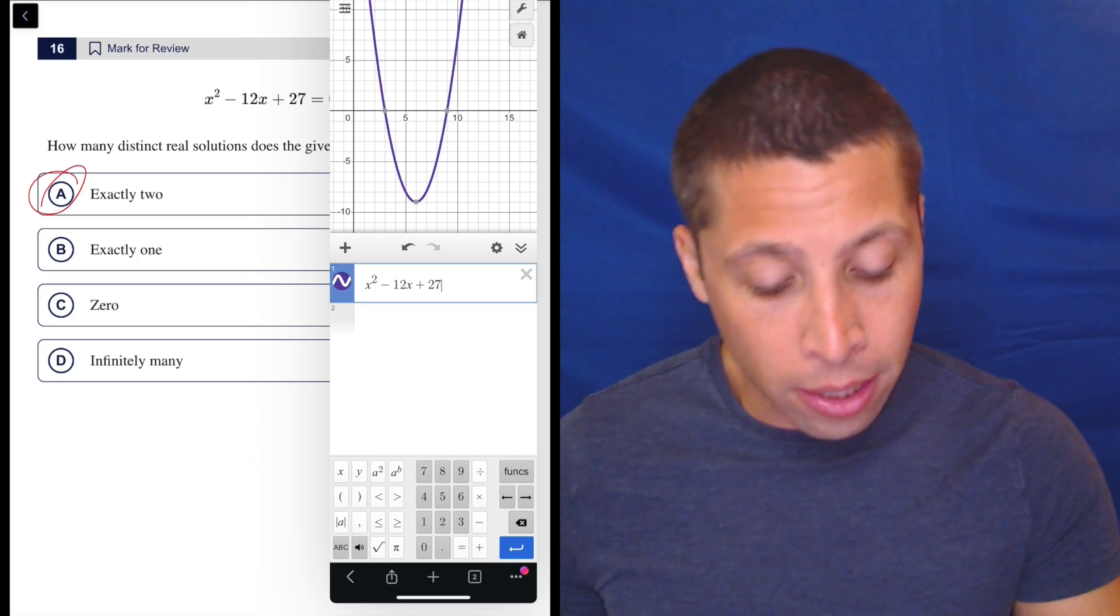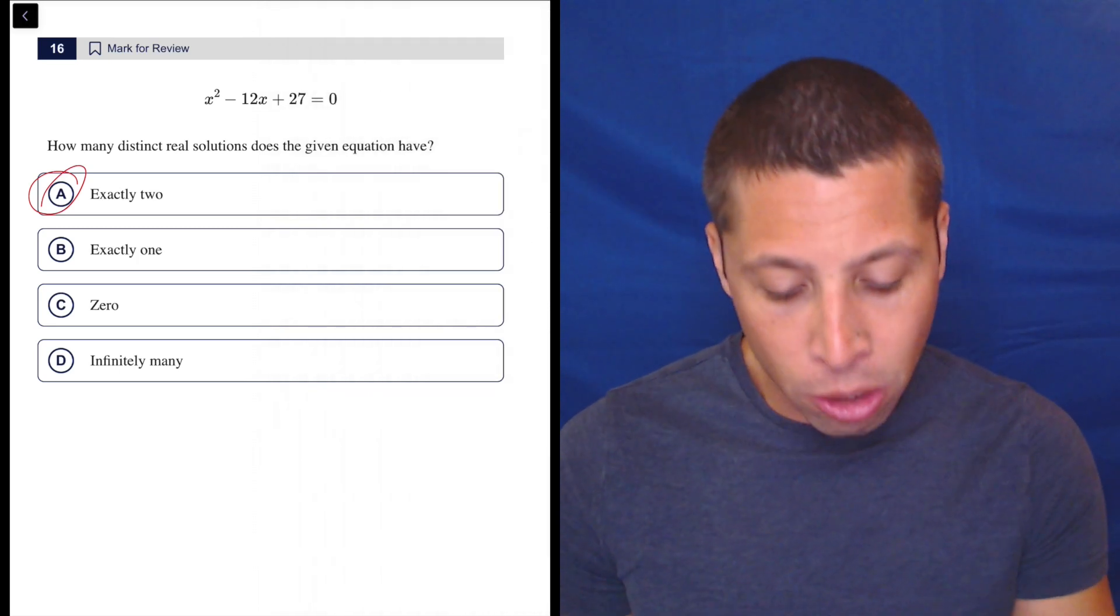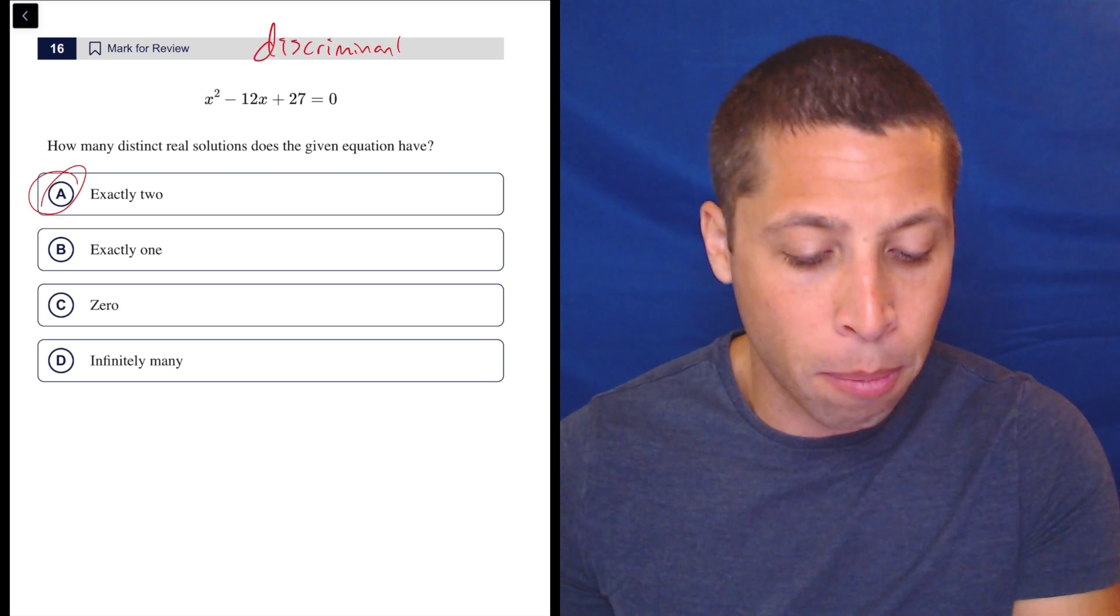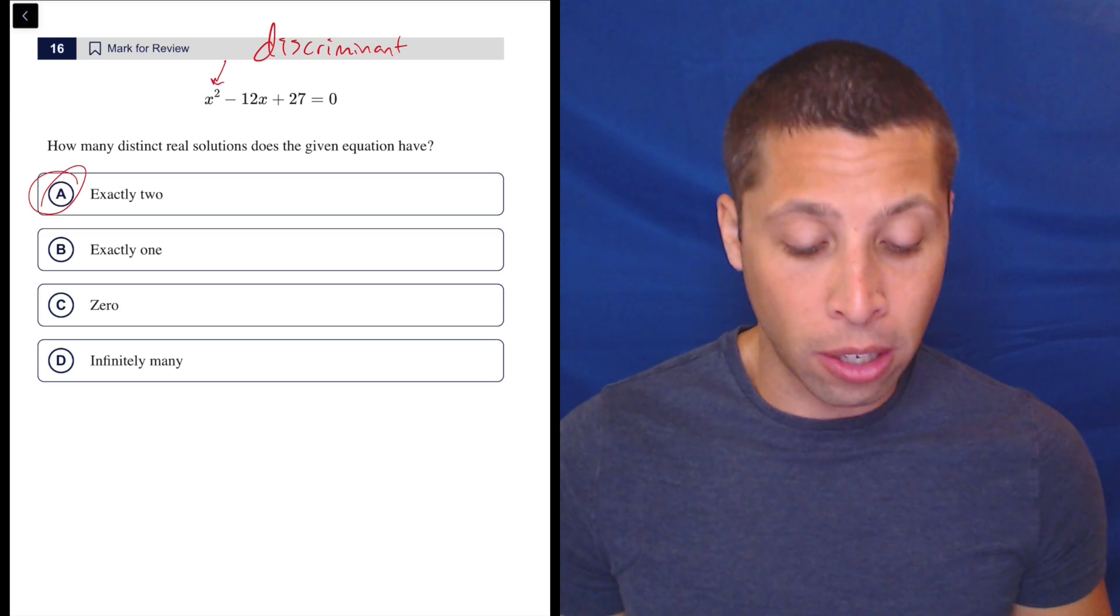Just because some of you are going to need this for harder questions, I am going to show the algebraic way to do this. We would need to use something called the discriminant. Anytime we are asked for the number of solutions and we have an x squared, we can use this idea of the discriminant.